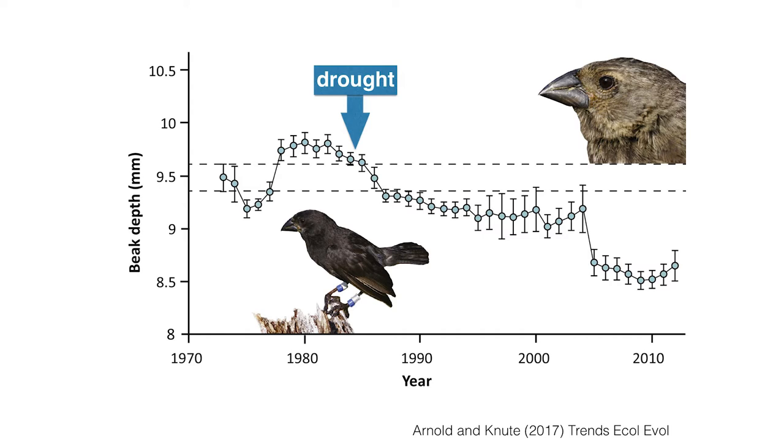Over time — here's 40 years worth of data — the depth of the beak changes. It went up a little in the 80s, then started going down. There were some steep drop-offs, and right around where that big drop happened in the late 80s, there was a drought. That drought affected the availability of seeds on the islands. Because of the change in seed availability, the beak size optimized for that food source changed, and individuals with smaller beaks were better able to survive and reproduce.